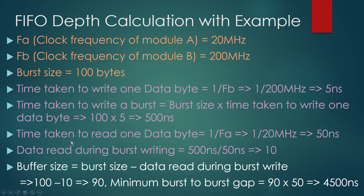Now on the read side: the time taken to read one data byte equals the time period of clock FA = 1/FA. Since FA = 20 MHz, this becomes 50 nanoseconds — meaning we can read one data byte in 50 nanoseconds. Now let us compute the data read during the burst write. We are writing the burst in 500 nanoseconds divided by 50 nanoseconds, which equals 10. So during the write time, we are able to read 10 bytes.